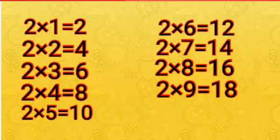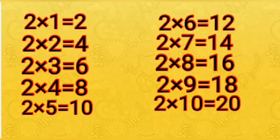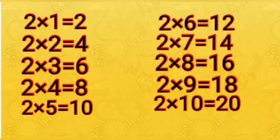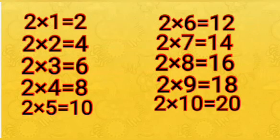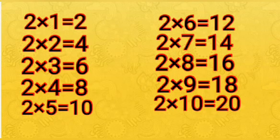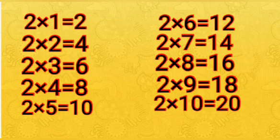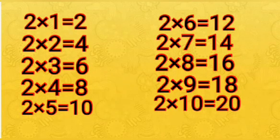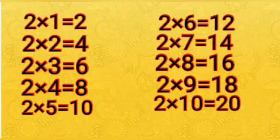2 tens are 20. Come on, let's recapitulate. 2 ones are 2, 2 twos are 4, 2 threes are 6, 2 fours are 8, 2 fives are 10, 2 sixes are 12, 2 sevens are 14, 2 eights are 16.